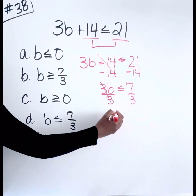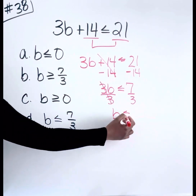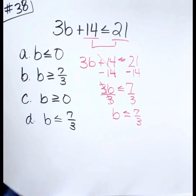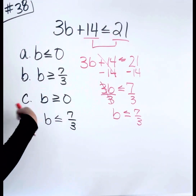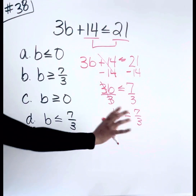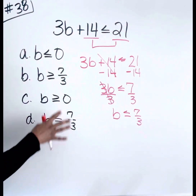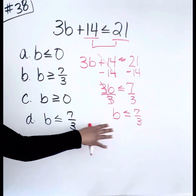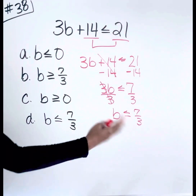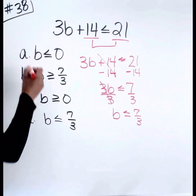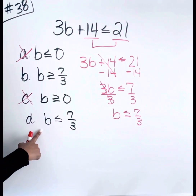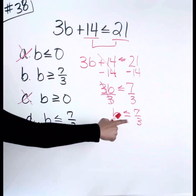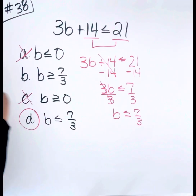The 3s cancel out and we bring down our values: B is less than or equal to 7 thirds. Normally when you end up with an answer as a fraction, the answer choices are already in that form, so don't go beyond that — just reference how the answers are given to know if you need to simplify or convert to a decimal. So we know it's not A, not C because of the zeros. With B and D, we just have to check the direction of the inequality symbol. The answer is D.